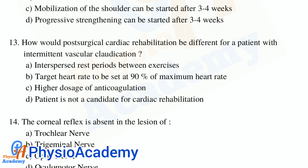Question number 13: How would post-surgical cardiac rehabilitation be different for a patient with intermittent vascular claudication? Option A: interspersed rest periods between exercises. Option B: target heart rate to be set at 90% of maximum heart rate. Option C: higher dosage of anticoagulation. Option D: patient is not a candidate for cardiac rehabilitation. The correct answer is option A.